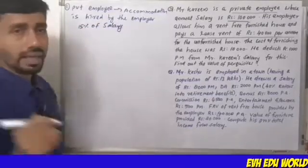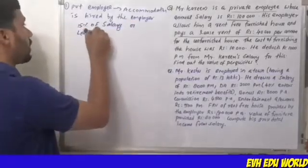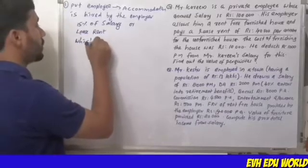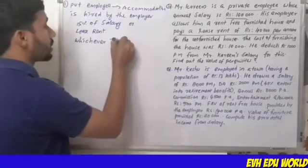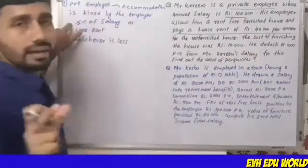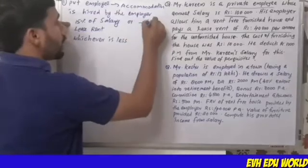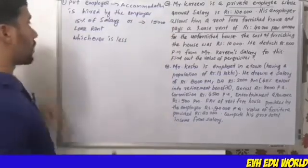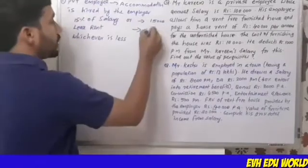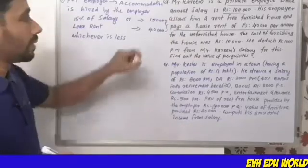15% of salary — now what is the least? We compare the lease rent. If there is a taxable value, then the taxable value is 15% of salary. Salary is Rs.1,00,000. So 15% of salary is Rs.15,000. We also have lease rent of Rs.40,000 per annum. We compare these two values.